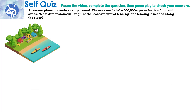An owner plans to create a campground. The area needs to be 500,000 square feet for four tent areas. What dimensions will require the least amount of fencing if no fencing is needed along the river? Pause the video, complete the question, try not to look at your notes, and then press play to check your answers.